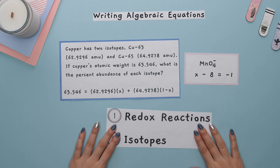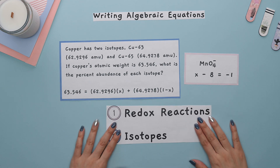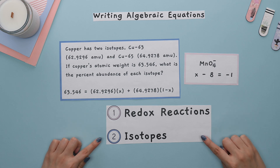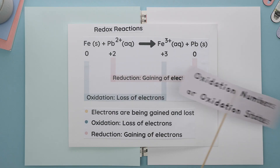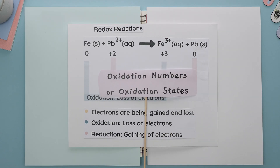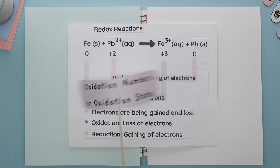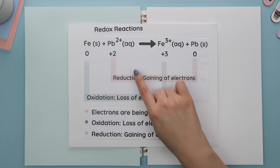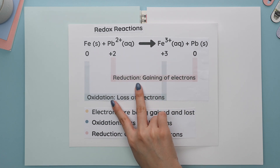Two main chemistry topics that require you to know how to write algebraic equations are redox reactions and isotopes. For redox reactions you will need to know how to find the oxidation numbers of each element. Recall that we use oxidation numbers or oxidation states to help us determine if electrons are being lost or gained and which reactant undergoes oxidation or reduction.